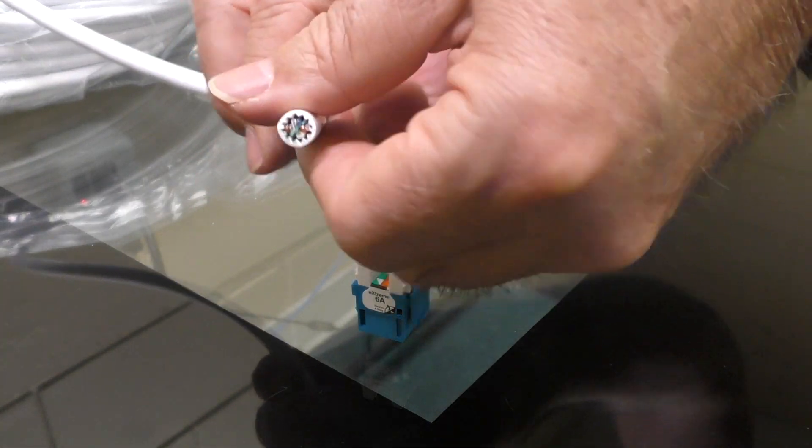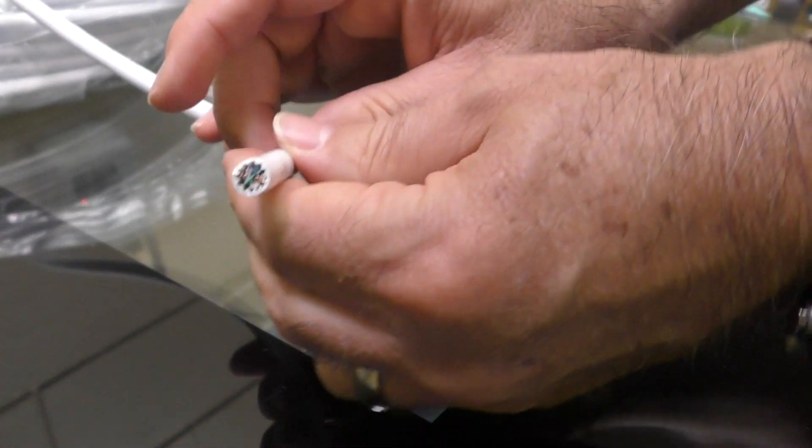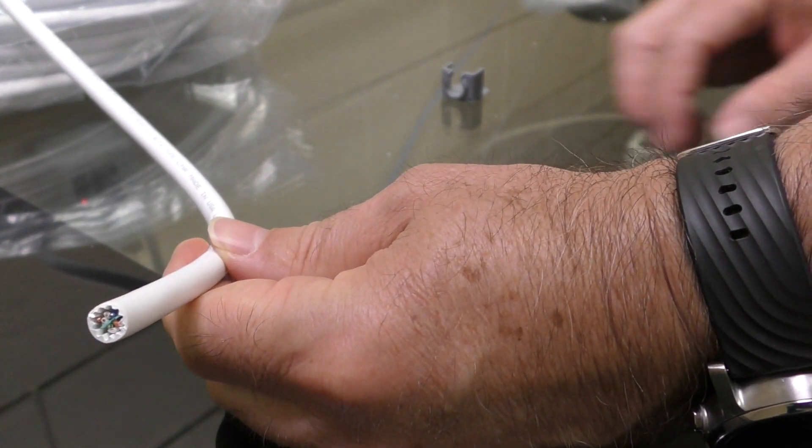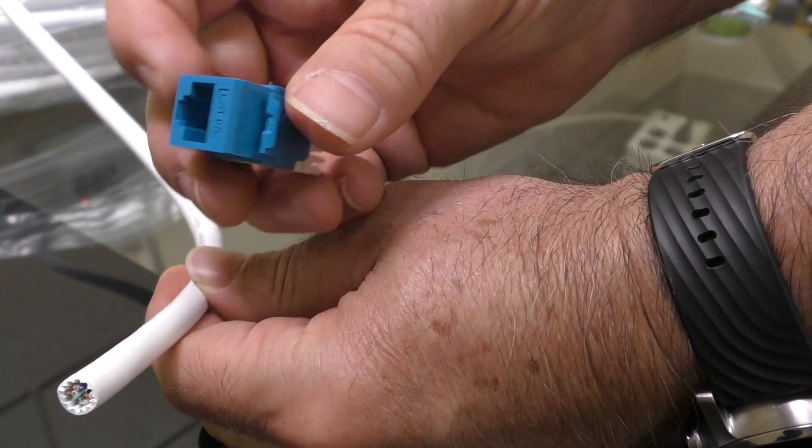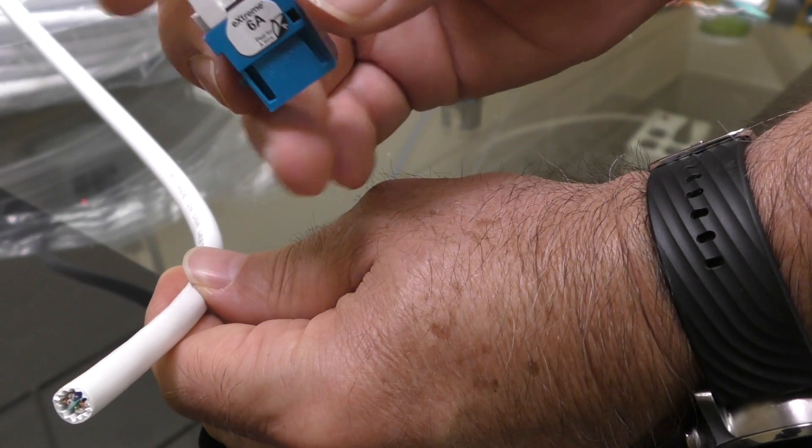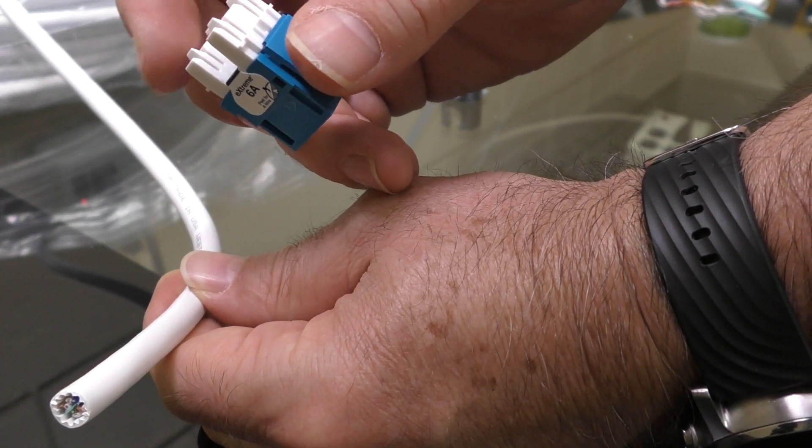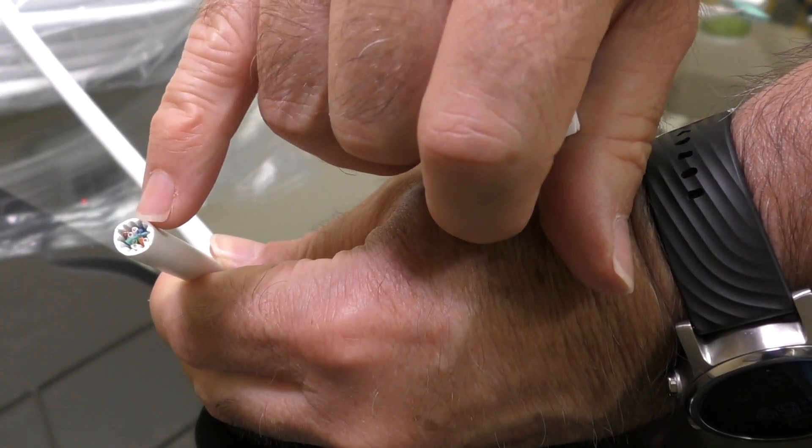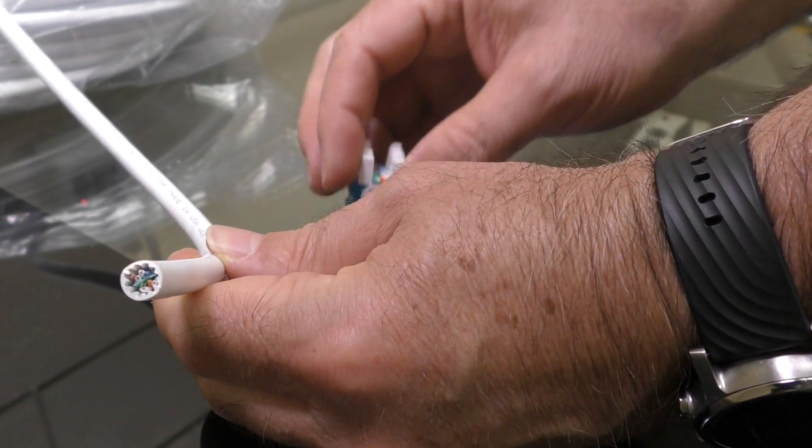The reason I mention that is it's a little bit harder to work with. I'm still kind of getting used to it myself. Also, the keystone jack you want to get, make sure that's a Cat 6A because it'll be ready to accommodate the thickness and the gauge of the copper wires inside.